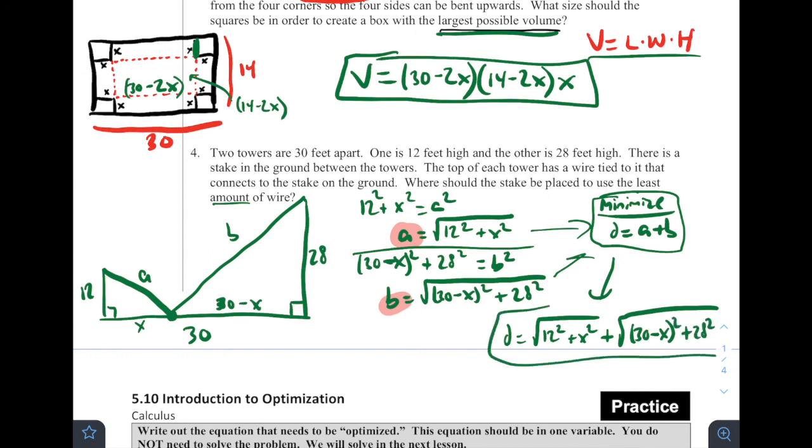And we're going to get that D is equal to the square root of 12 squared plus X squared plus the square root of 30 minus X quantity squared plus 28 squared. This now is set up where the distance is being represented by only one variable, right? It's all X's now. There's no A's, there's no B's. And so we're set up and we're ready to be able to do our optimization with calculus in lesson 5.11. But that is it for today.